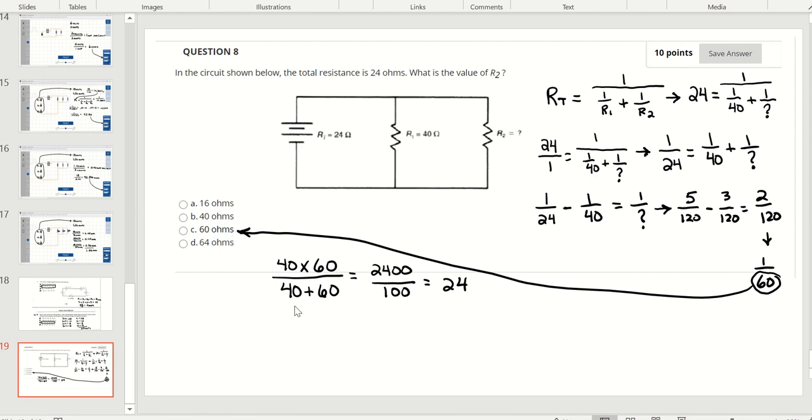To confirm that is correct, we do the equation of product over the sum for two resistors in parallel. It's 40 times 60 over 40 plus 60, 2400 over 100 gives us a total resistance of 24 ohms.